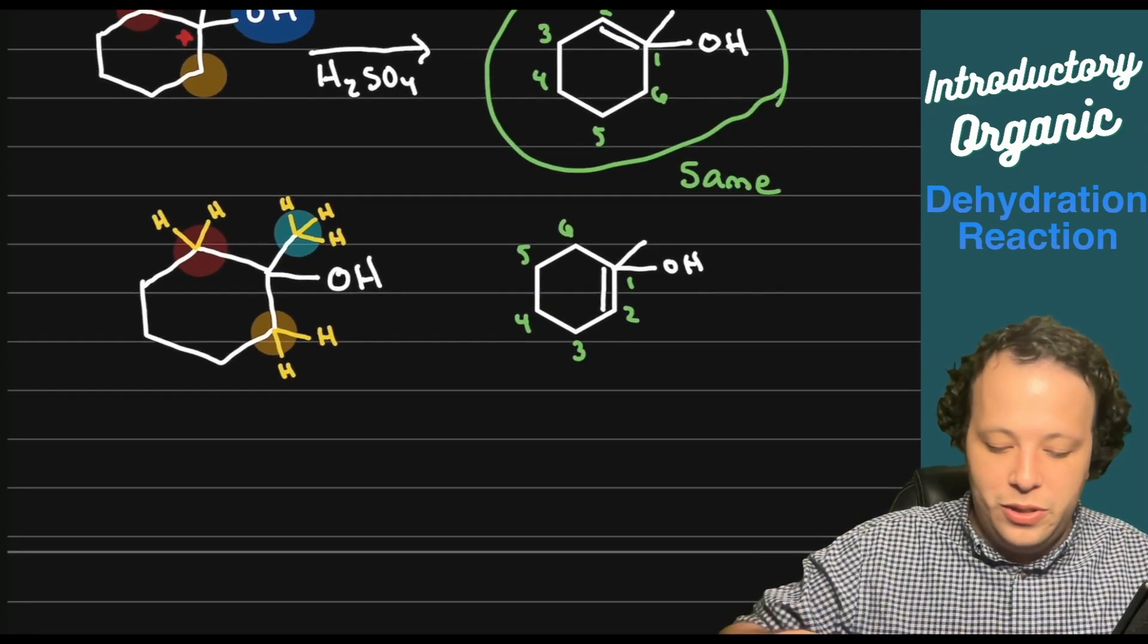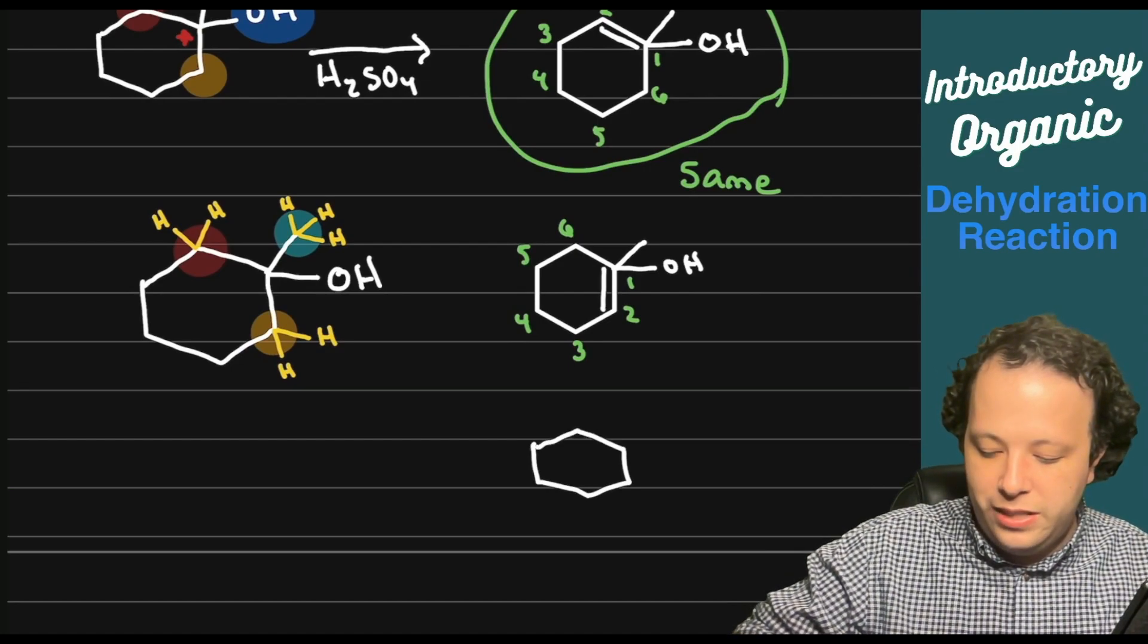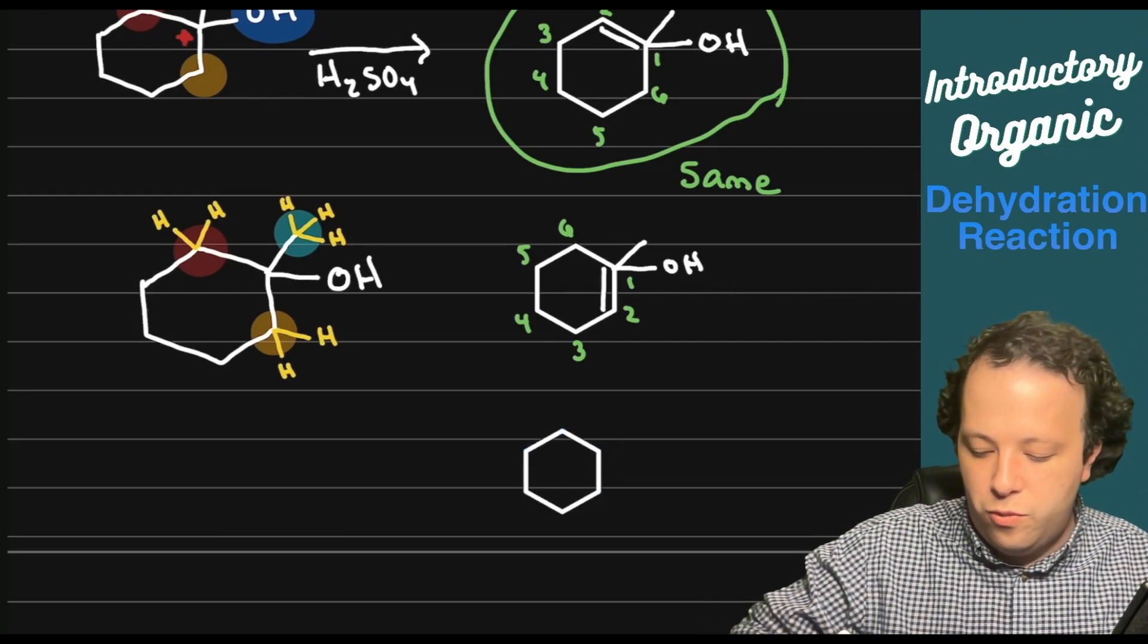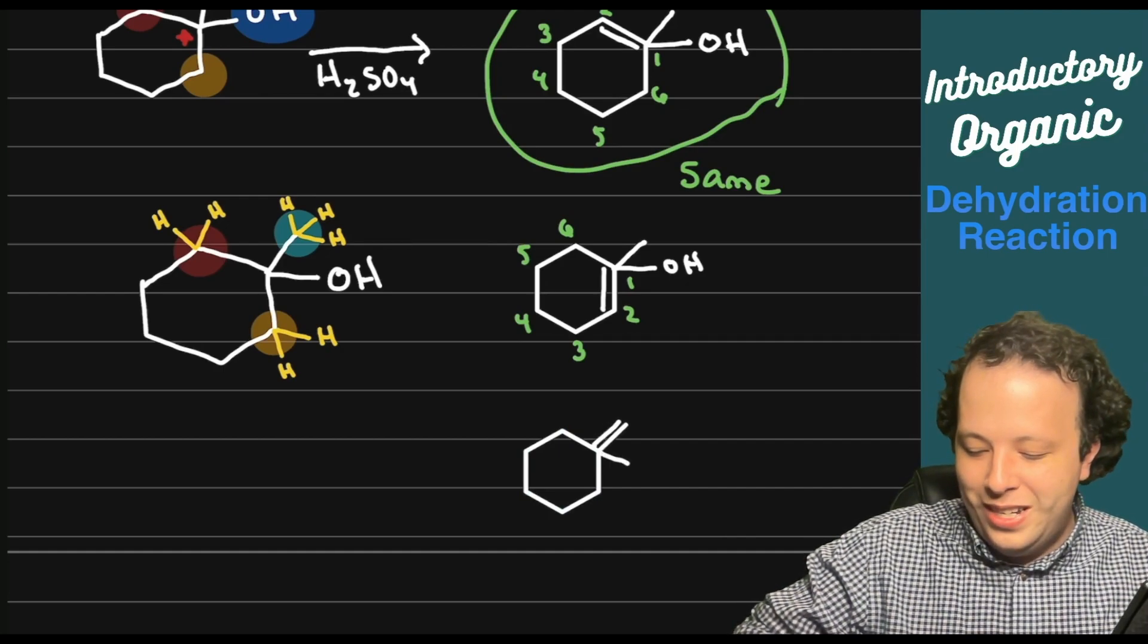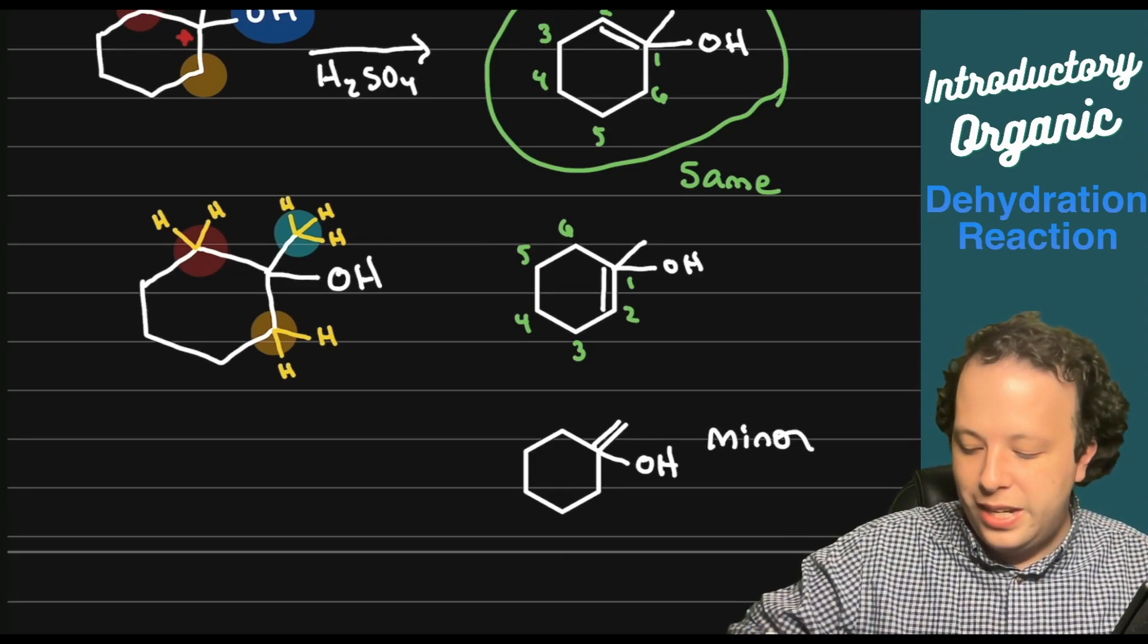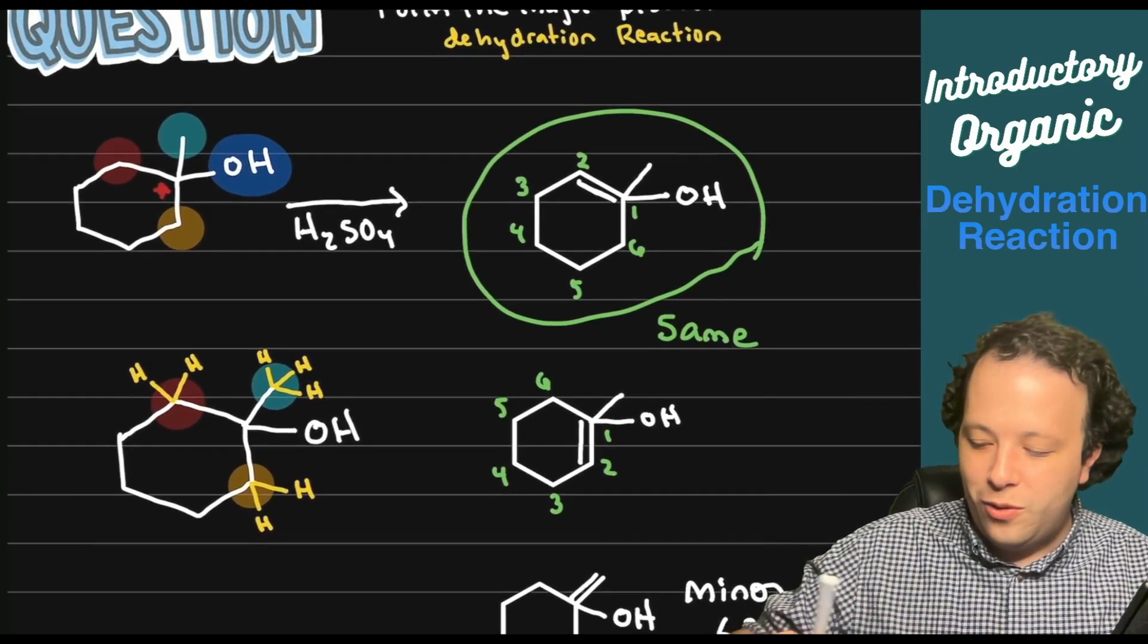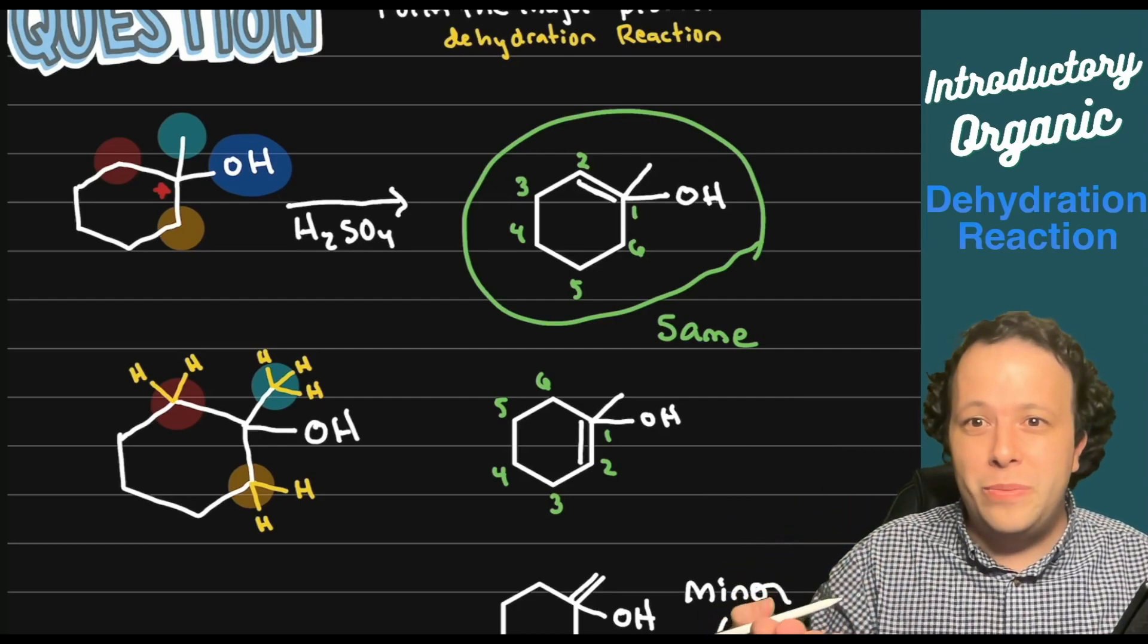And if you want to, you could draw your minor product as well. Typically in most introductory classes, you're never asked to draw a minor product, but just in case you are curious about it, we could write that as well. Where in this case, you're going to have the double bond on the methyl group with an OH. So this is minor. This would probably be less than 20% at most. Whereas the one in green is your major product for this, which would be the answer on any exam or homework and should be accepted. It all depends on your professor or your teacher.